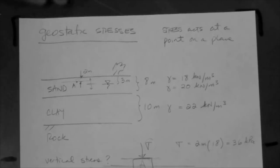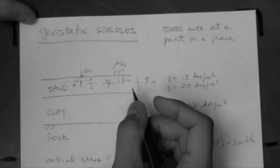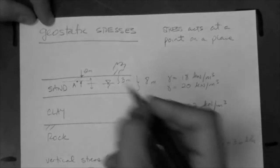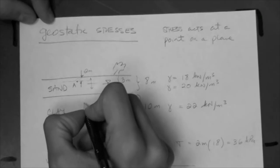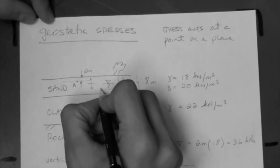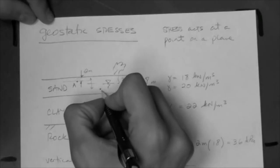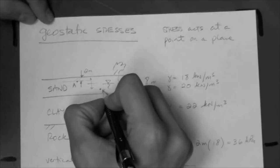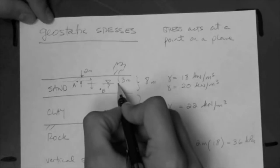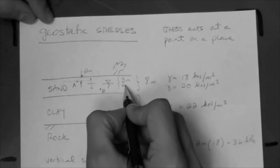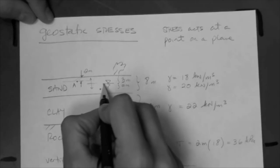Now, let's ask another question, and that question is: what is the stress — vertical normal stress — at this point? Let's call this point B. You can see the point there. Let's say that this point is 2 meters below the water table.